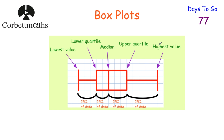It's also quite useful to remember that half of the data lies below the median and half above. Between each of the vertical lines, 25% of the data lies. So between the lowest value and the lower quartile is 25% of the data, between the lower quartile and the median another 25%, between the median and the upper quartile 25%, and between the upper quartile and the highest value another 25%.